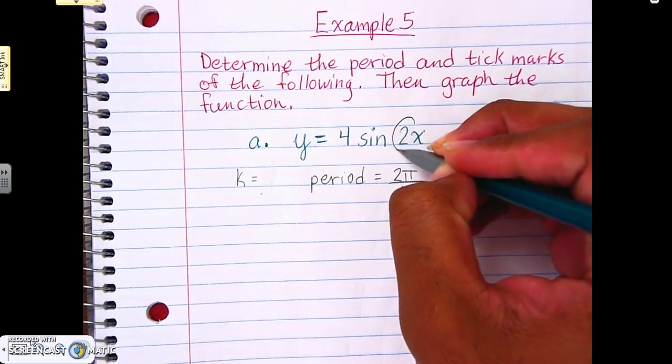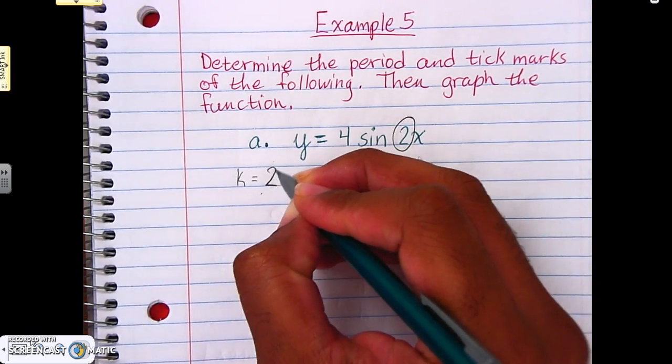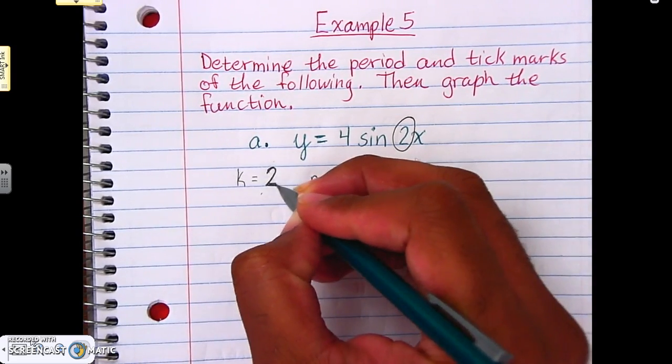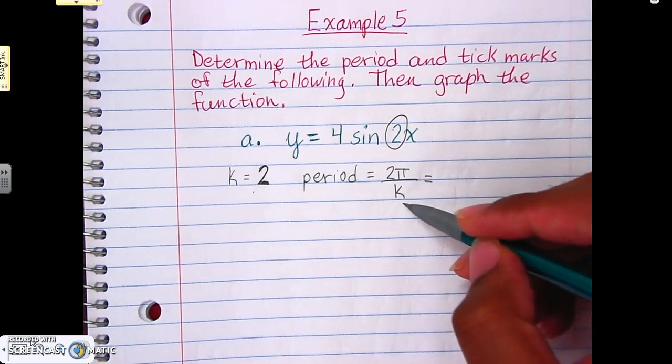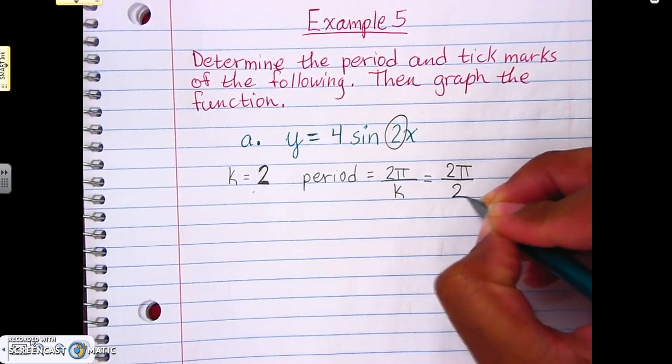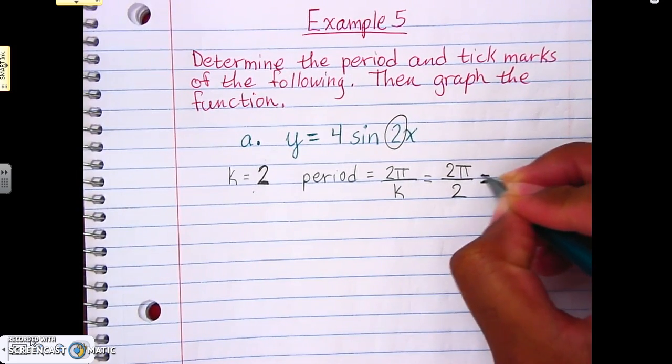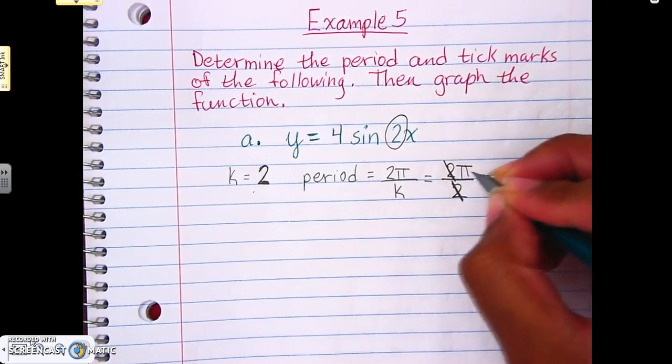K is 2. So if k is 2, to find that period, we do 2π over k, which is 2π over 2, and that reduces down to just π, because our 2's cancel out, and we're left with just a π.